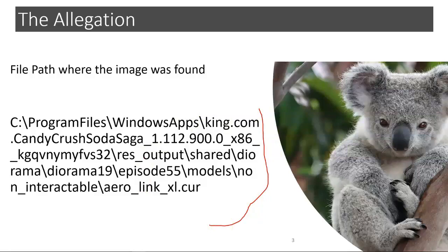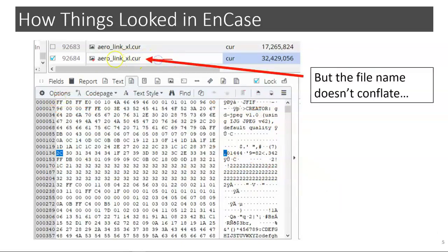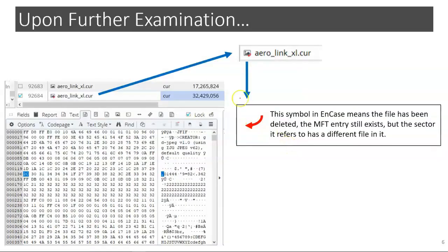Well, this is NCASE and this is how things looked in NCASE. What we see here is that certainly by the file header and the hex header it certainly looks like a picture. When we look at the name, well, there's the name, but the name isn't a picture name. It's a .cur — that's a cursor file. So the name doesn't conflate to the picture.